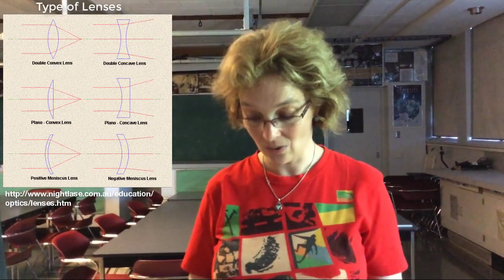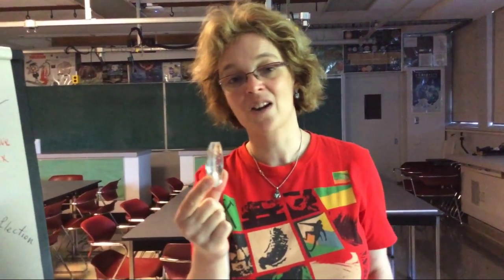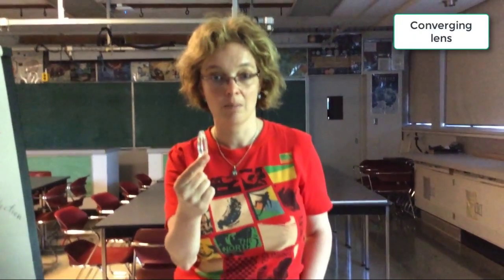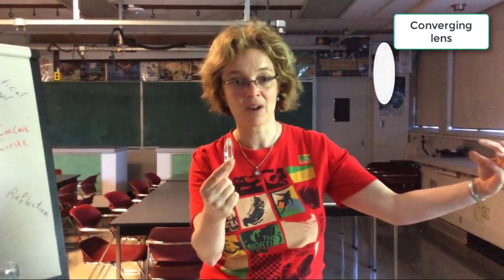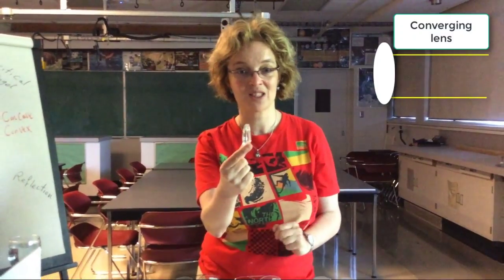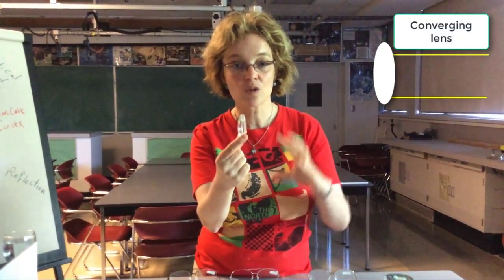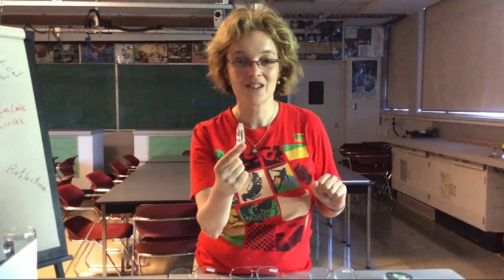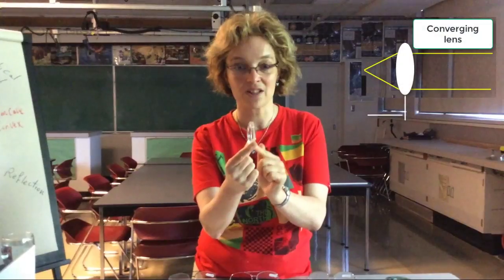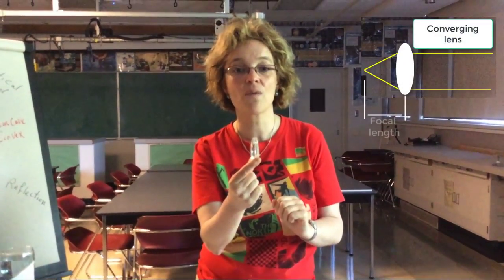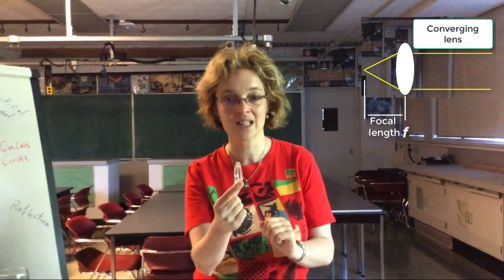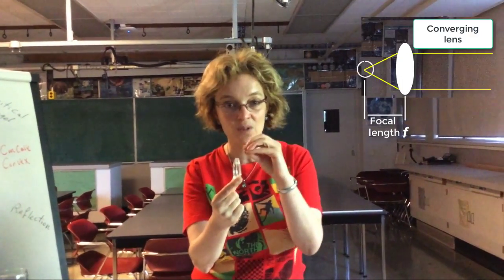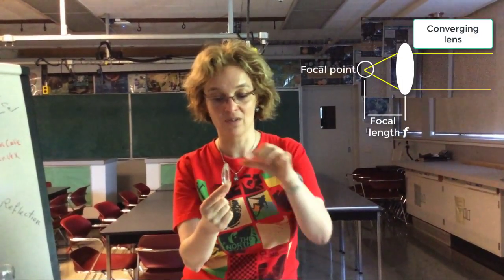The question is, what do those lenses do? For example, you might have heard that this lens, which is a biconvex lens, is a converging lens. First of all, what does converging mean? Converging means that if you have a parallel beam of light coming from the outside, this light after coming through the lens will converge into a point. And if the light beam is parallel, the distance from the lens to the point where the light converges is called the focal length of the lens, and the point where the light converges is called the focal point of the lens.